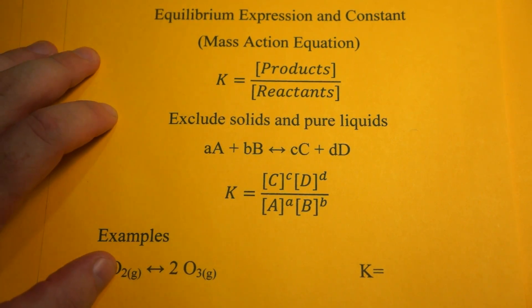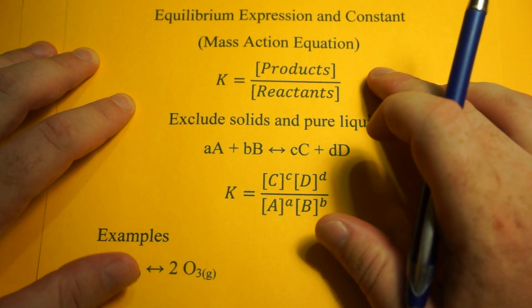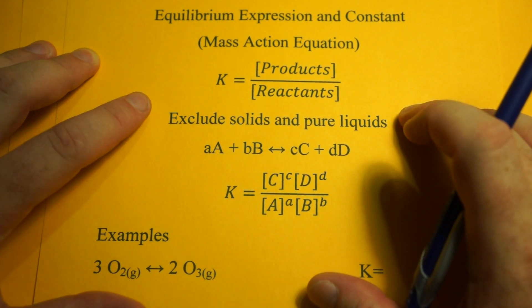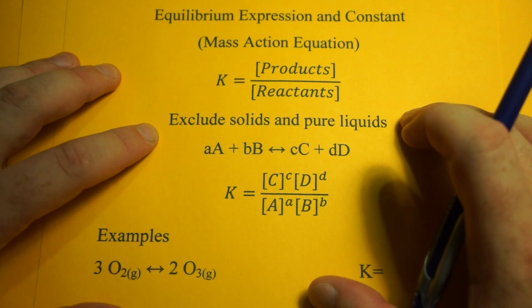This video will go through the equilibrium expression and constant, called the mass action equation. K equals the concentration of the products over the concentration of the reactants. One thing you have to know is you must exclude solids and pure liquids. I'll go over that when we get to some examples.